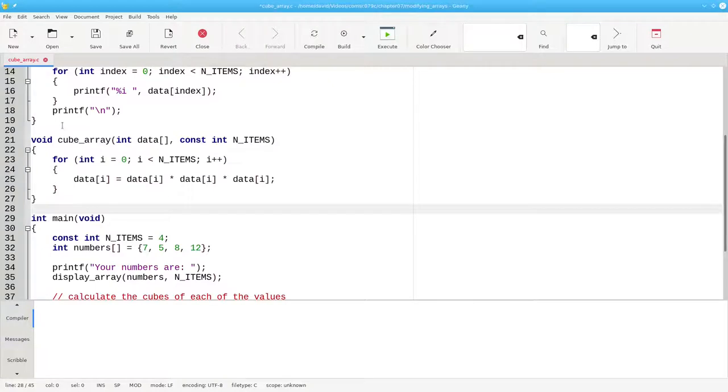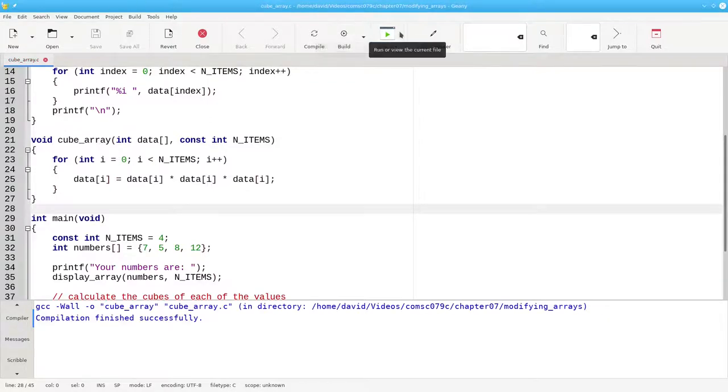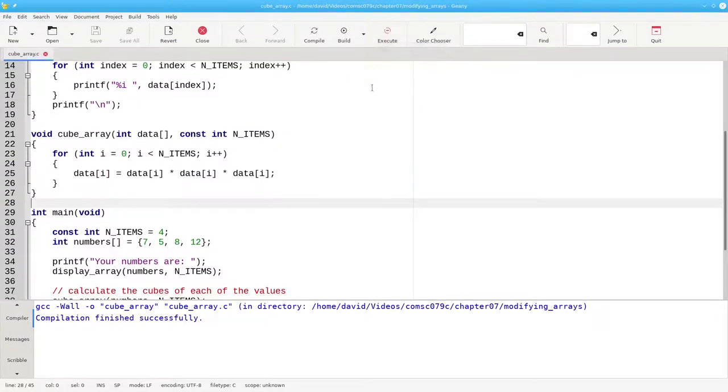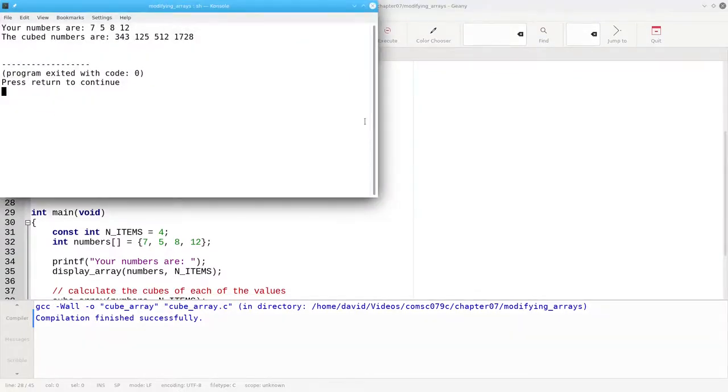I've changed the loop variable from index to i so I can fit the code onto the slides in the later part of this video. Let's build the program and see what happens when we run it. The program still works. The array contents have changed.